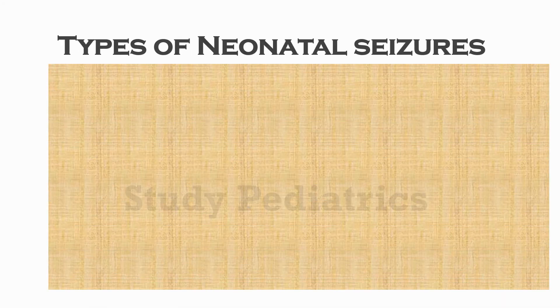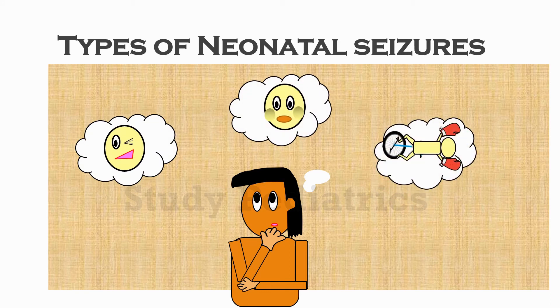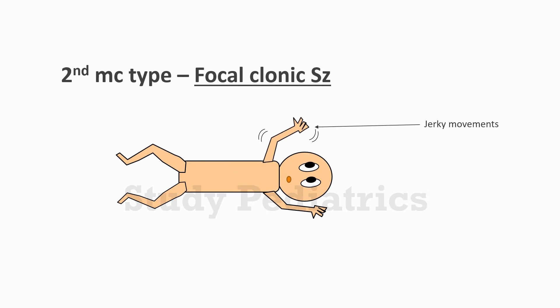Now let's see the types of neonatal seizures. A child who quite often shows suspicious activities like blinking, chewing, boxing, or cycling — this is the subtle type of seizure, which is the most common type. The second most common type is focal clonic seizure, which involves only a part of the body, as can be seen here.